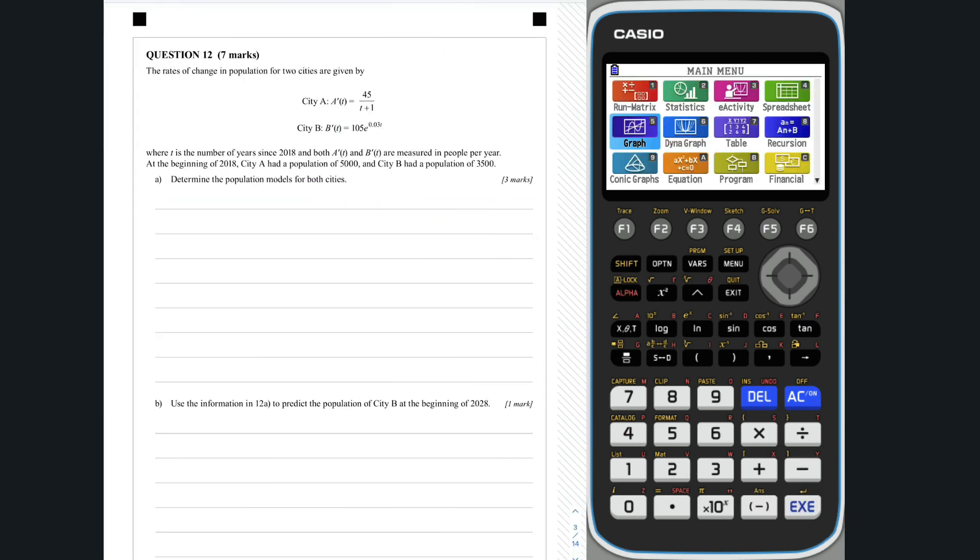Question 12a. To determine the population model of city a, we will integrate its rate of change, a dash of t.